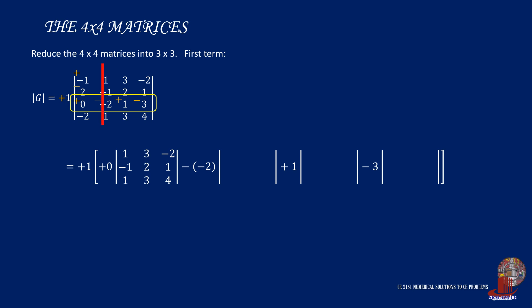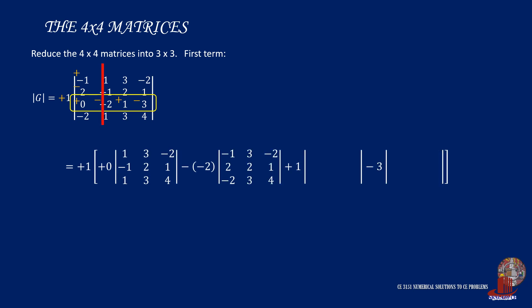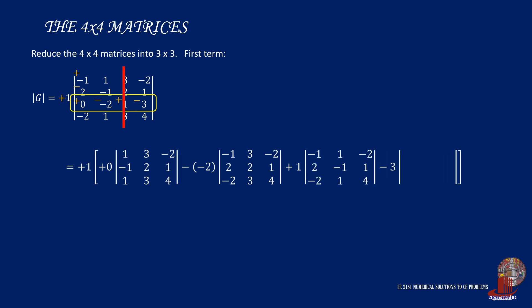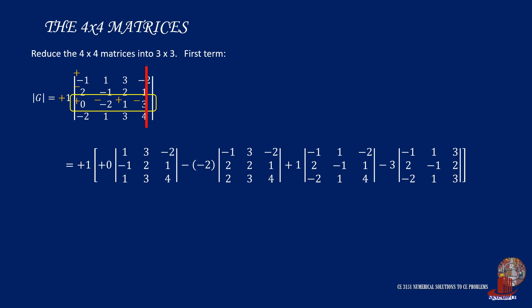Covering the second column, we would then find the elements for the second term determinant. With the third column covered, we get the elements for the third term determinant. Then, covering the fourth column leaves the elements for the last term determinant. Now, consider focusing on the first term. This is preceded by a 0-valued scalar, making the term 0.